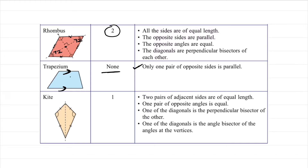The horizontal line cannot be an axis of symmetry for a kite because the top part is shorter and the bottom is longer, so it's not symmetrical. Only the vertical line can be the axis of symmetry. A kite has two pairs of adjacent sides of equal length — 'adjacent' meaning the sides next to each other are equal.